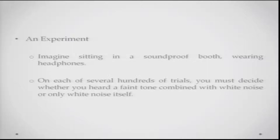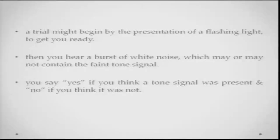Different kinds of experimental manipulations can be done with the receiver. Imagine if you are sitting in a soundproof booth wearing headphones and you have been asked to decide whether you heard a faint tone combined with white noise, or whether you only heard white noise. A trial might begin with a flashlight to gain your attention. Then you hear a burst of white noise which may or may not contain the faint tone signal. You have to decide whether the white noise contained that signal or not — you say yes if you think a tone signal was present and no if you think it was not.